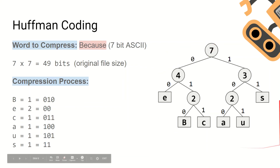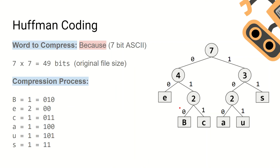The letter B is now represented as 0, 1, 0. This is because you start from the top of the tree and work your way down the nodes until you get to the letter B — so 0, 1, 0 represents B. E is now represented as 0, 0. C is represented as 0, 1, 1. A is represented as 1, 0, 0. U is represented as 1, 0, 1. And S is represented as 1, 1.